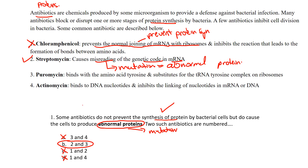Let's see if number three does the same thing. Number three says that antibiotic binds with the amino acid tyrosine and substitutes that particular amino acid. We know that if you substitute or replace one amino acid in the chain, that can often lead to an abnormal protein. This is a form of missense mutation — that substitution is going to put a different amino acid into the chain, making it abnormal so it won't function correctly. So number three is also correct.